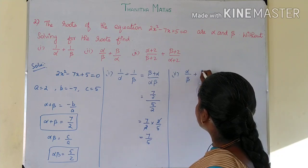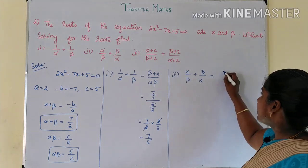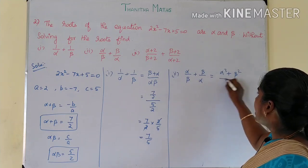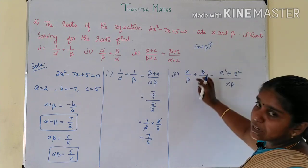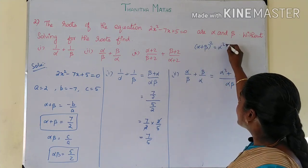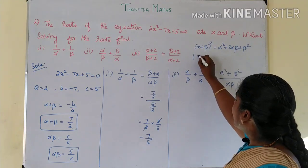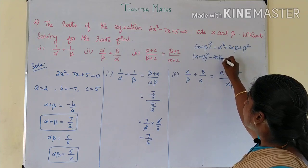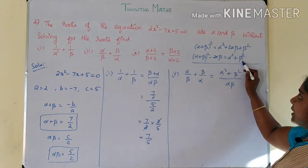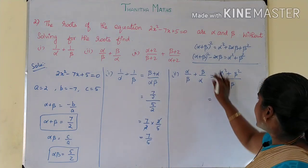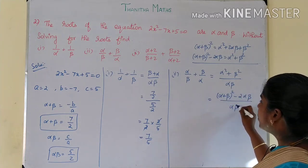Next, α/β + β/α. Taking the common denominator, this equals (α² + β²) divided by (α × β). We use the identity: α² + β² = (α + β)² − 2αβ. So the expression becomes [(α + β)² − 2αβ] divided by (αβ).